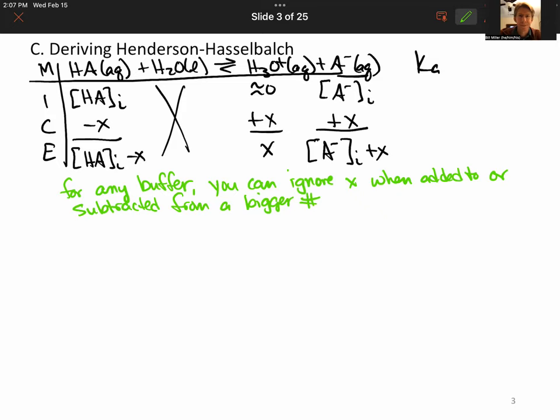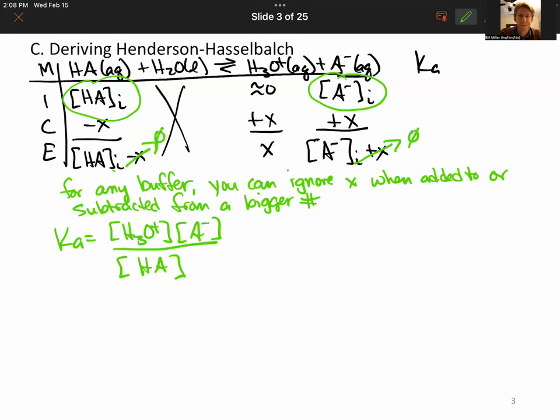And because you're starting with some products and some reactant in relatively large quantities, the X values you're going to get from this kind of situation are very different than if you had two zeros or approximately zero on the product side. Which means that we're going to be able to ignore X. So when I write this up, we've got Ka equals concentration of hydronium times concentration of A minus over concentration of HA. We've already ignored our X's. This is the expression that we get.